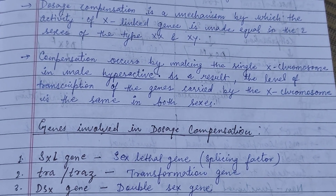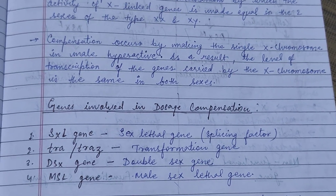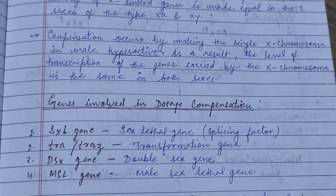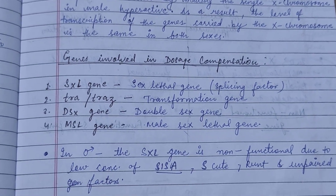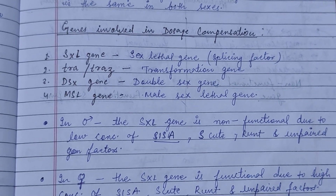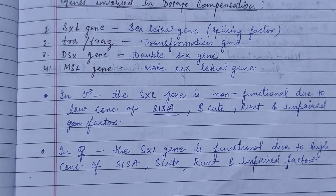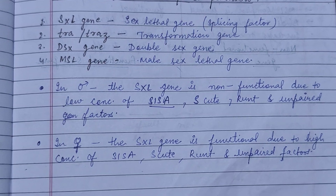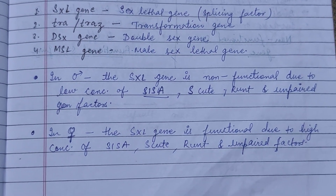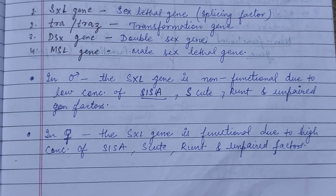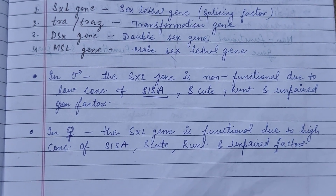In simpler words, dosage compensation is a process by which the female's two X chromosomes are made equivalent to the male's one X. The genes involved in dosage compensation are: the Sxl gene (sex lethal gene), which is a splicing factor; the tra or transformer gene; the dsx gene (doublesex gene); and the MSL gene (male-specific lethal gene).